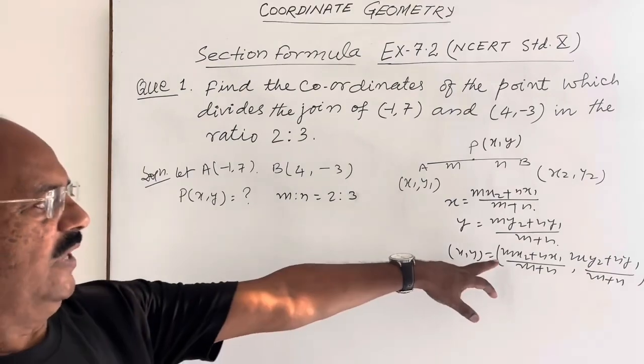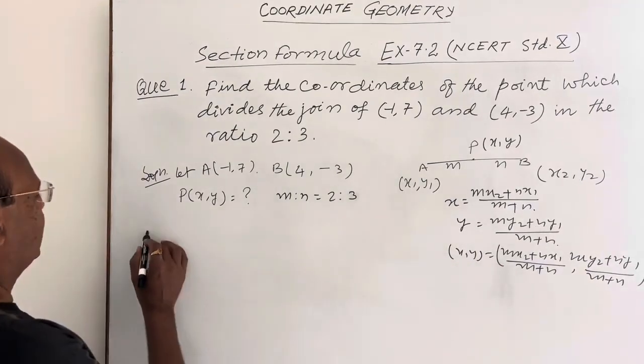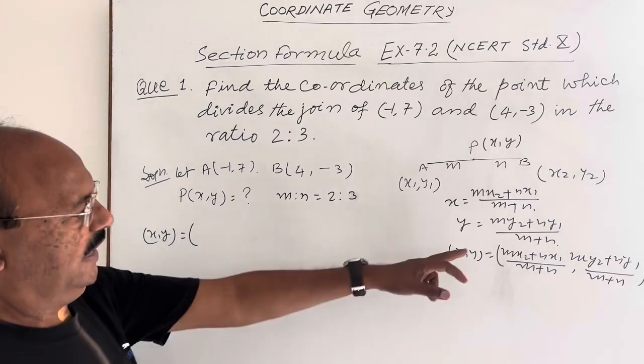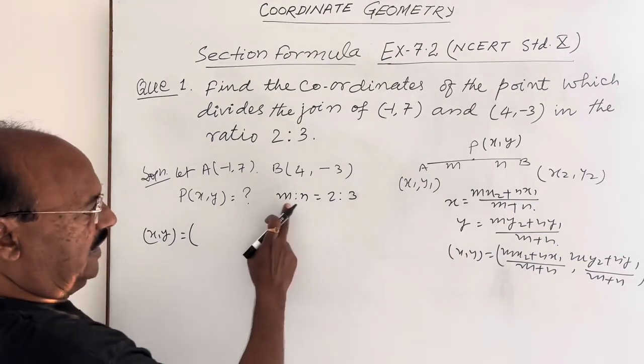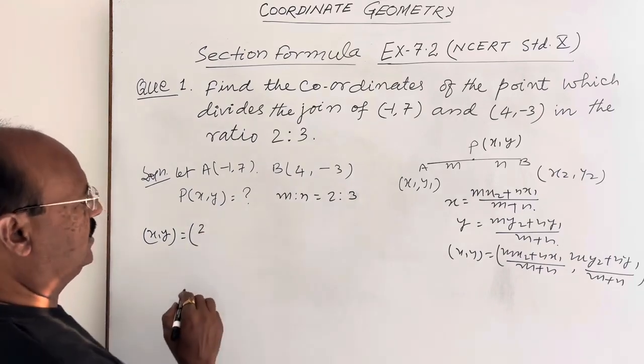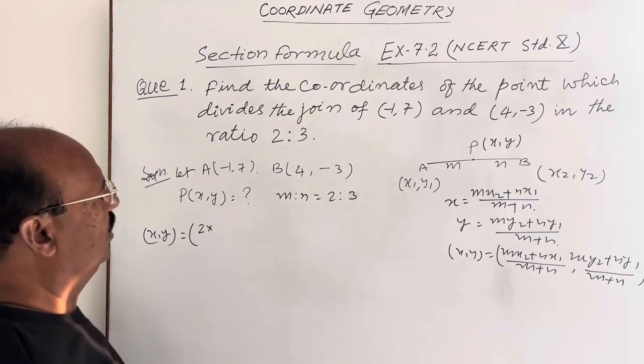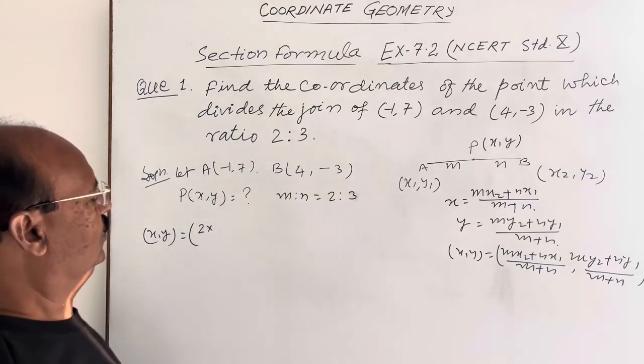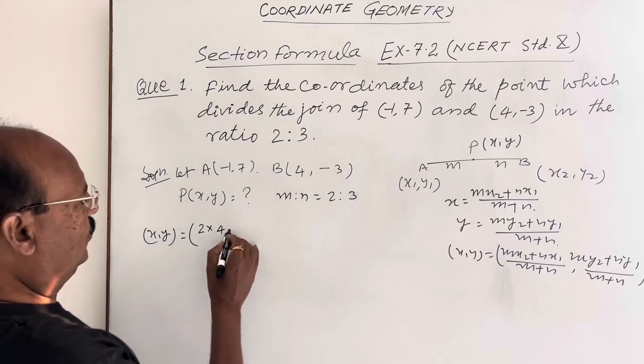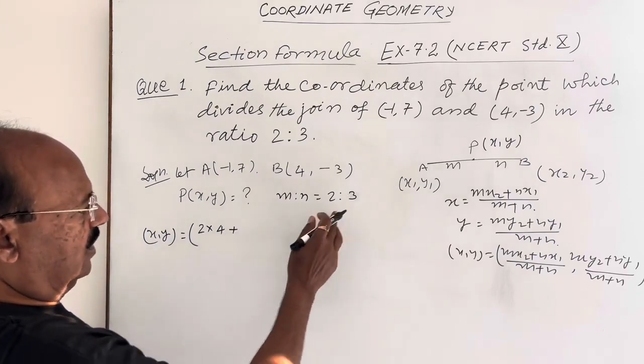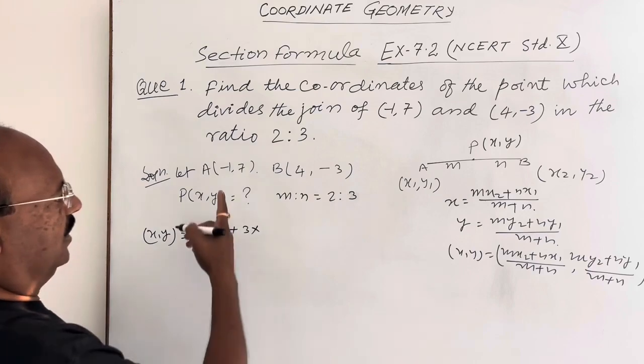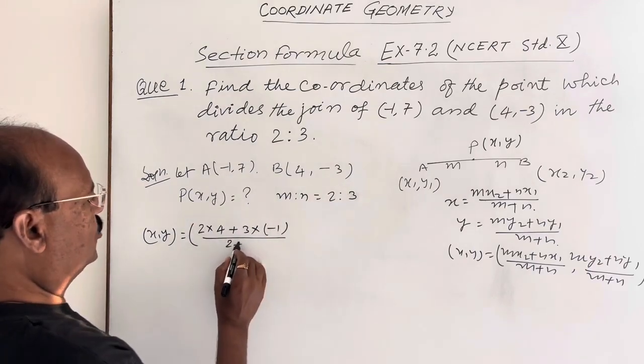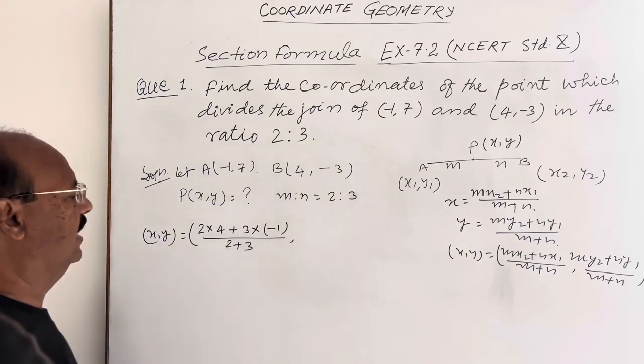So we will apply this formula here. In this case, (x,y) can be written as: mx2, in place of m we have to write 2, into x2 - this is x1,y1, this is x2,y2 - so 2 into 4, mx2 plus nx1, n is 3 into x1, x1 is -1, divided by m plus n, that is 2 plus 3. This is the value of x, the x-coordinate of point P.